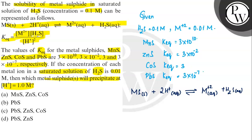Here we can write Q equals [M+2] times [H2S] divided by [H+] squared, because 2 moles of H+ are given.